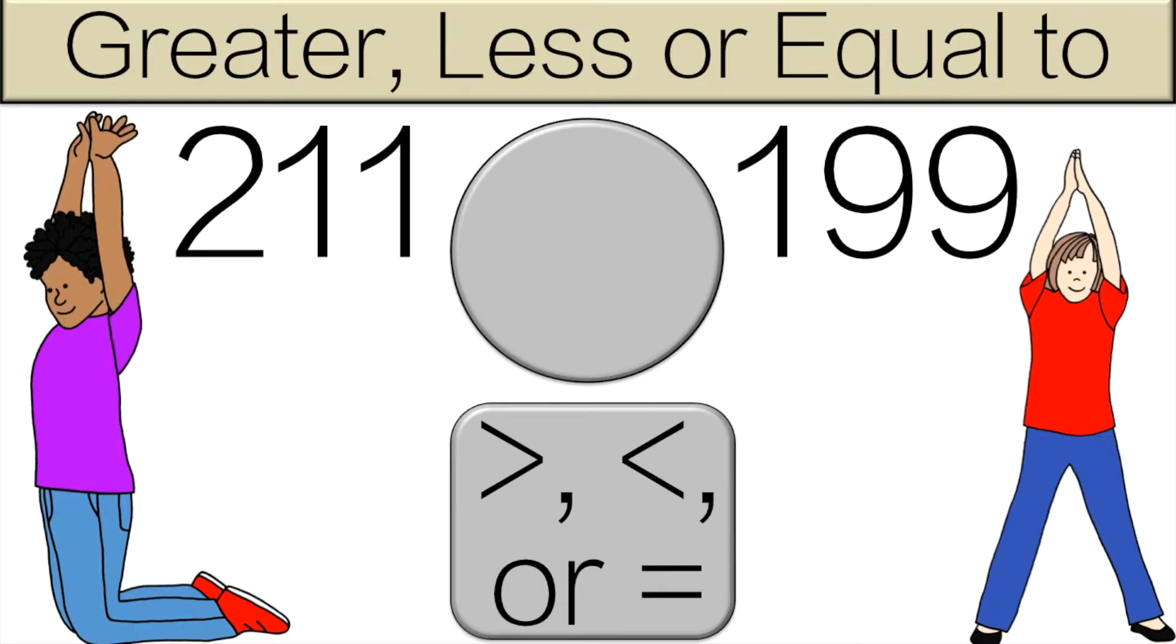Look at the numbers. Which one is greater? 211 is greater, so you have to do the pose on that side, which is the L pose, for 10 seconds.